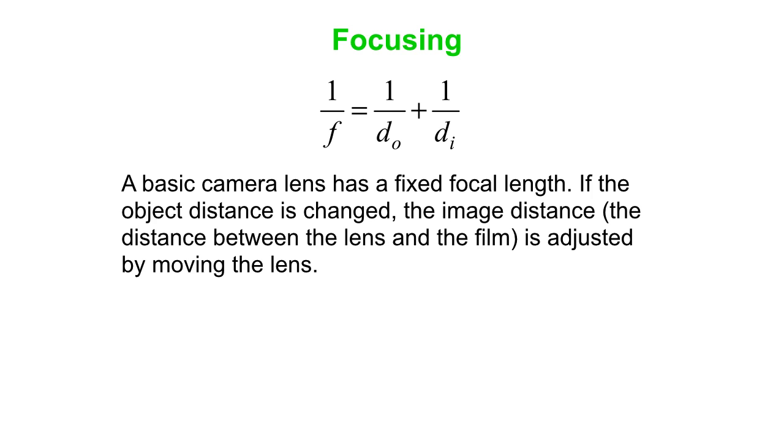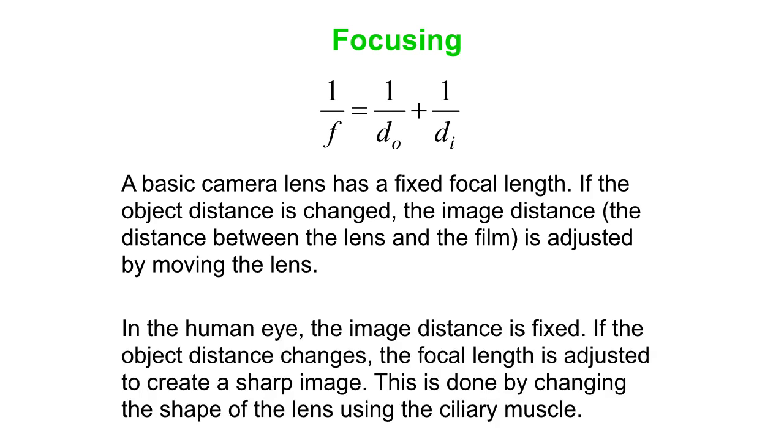So we'll contrast that with the human eye. Now with the human eye instead of the focal length being fixed it's the image distance that's fixed. So that's the distance from the lens of your eye to the retina. You know you really can't change that distance. So when you look at a close object and look at a far object what has to happen? Well you have to change the focal length. And that's actually done by physically changing the shape of the lens itself using the ciliary muscle.